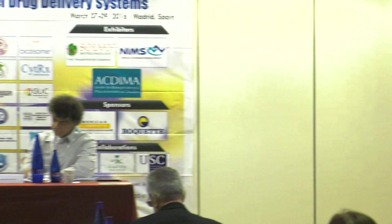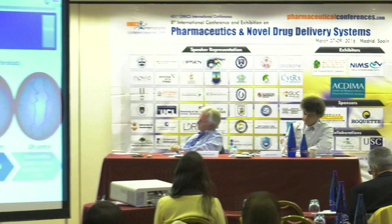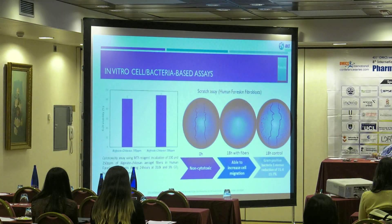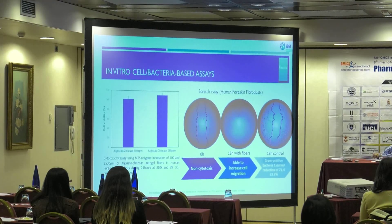We then did a scratch assay: we have a monolayer of fibroblasts, we simulate a wound by scratching with a micropipette tip, and then we add — or don't add — the fibers. As you can see, after 18 hours with the fibers it is really difficult to see the scratch. In the control case without the fibers, the scratch remains and the cells are quite stressed.